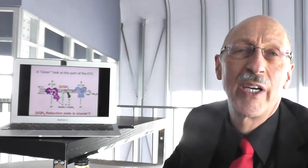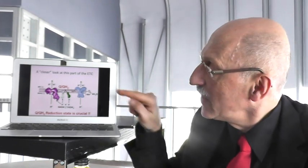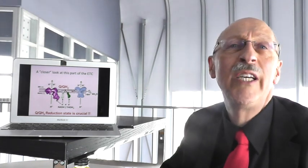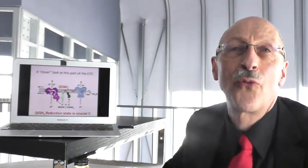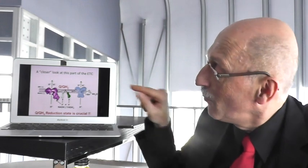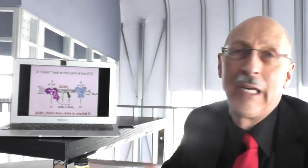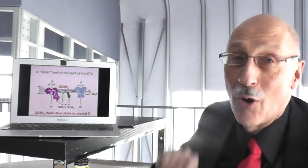This whole process of ROS formation is worsened by the fact that complex 3 does something strange. It takes up electrons from QH2, making Q again, but it has a cycle in which it also gives off electrons again to Q, making QH2. Why does it do this? Because this is probably one of the oldest forms of transferring protons from the inside to the outside. The QH2 that is made into Q on top releases its protons in the intermembrane space, while the second one uses protons taken from the matrix. So this is an old-fashioned constraint that you can do nothing about. And that means that complex 3 competes with complex 1 and these other complexes for Q. And that's a difficult situation to solve.